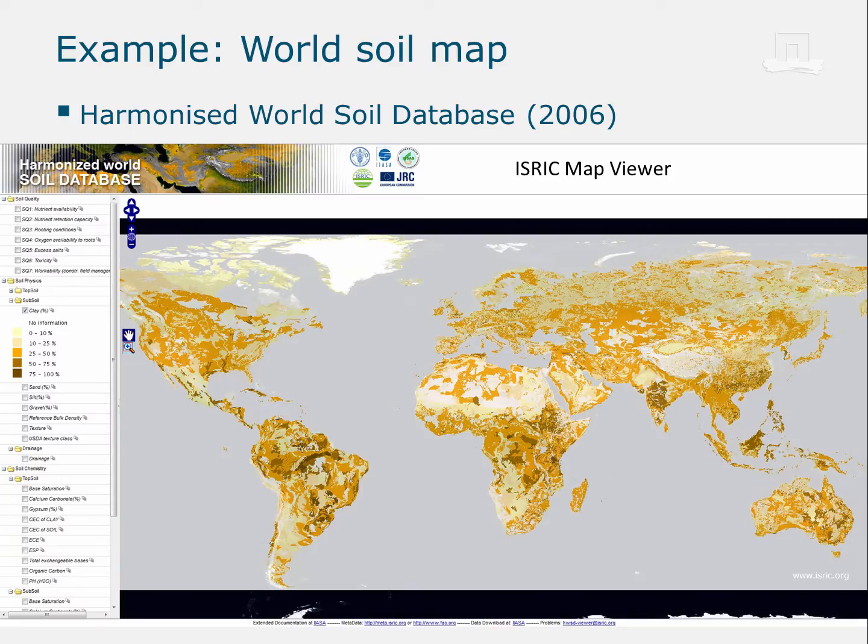You may be surprised to learn that there are global soil maps. The Harmonized World Soil Database released in 2006 contains some 16,000 mapping units. These units link to a database with soil property data such as pH or soil organic carbon content. You can display maps of these data in our ISRIC map viewer. Shown here is an example of global clay contents in the subsoil. You can also download and work with the data itself, but in this case you would need some experience with geographic information systems, or GIS for short.